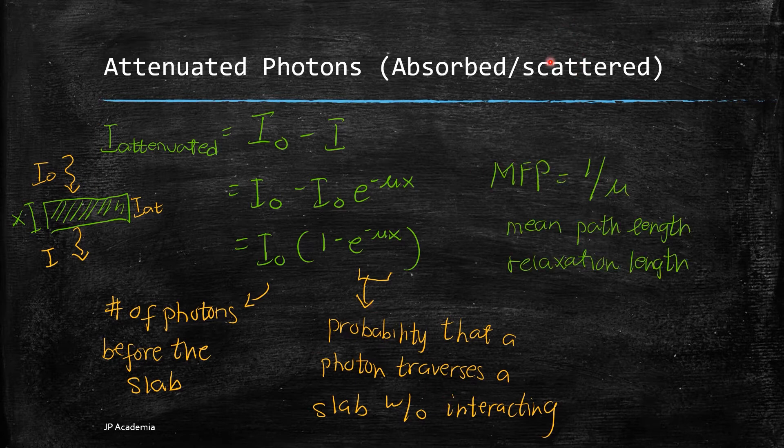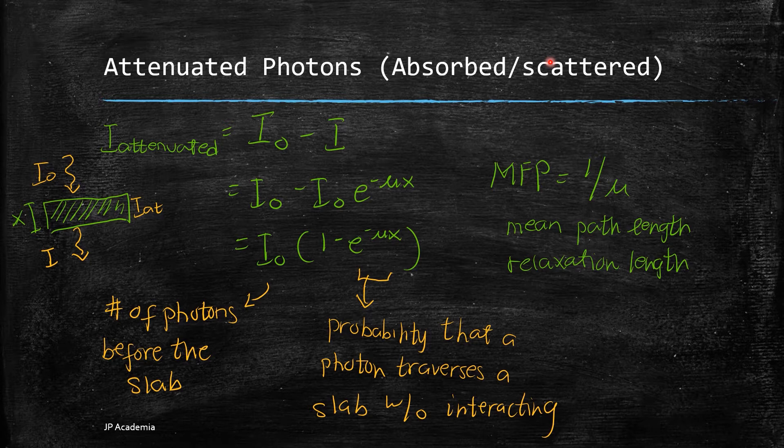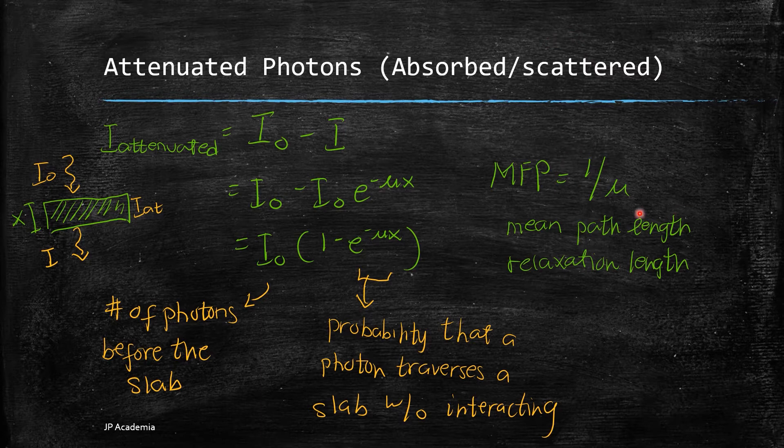Your exponential function here refers to the probability that a photon traverses a thin slab without interacting. So last, I will define here mean path length or mean free path. So this is the average distance traveled by photons before interaction in a medium. This is just the inverse of the total linear attenuation coefficient.